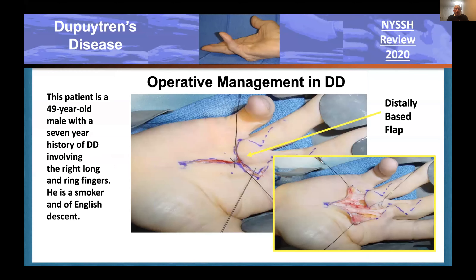Here is a 49-year-old male with a seven-year history of Dupuytren's involving the long and ring fingers—an Englishman and a smoker. We used a longitudinal incision in the palm out to the distal palmar crease and then zigzag into the fingers. I found that if you extend the incision into the fingers right away, what was drawn as a definite zigzag becomes longitudinal if you don't release the proximal part of the cord first before defining the incision pattern in the digit.